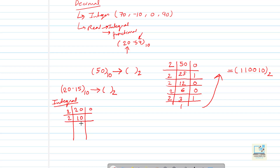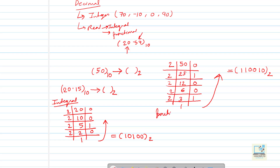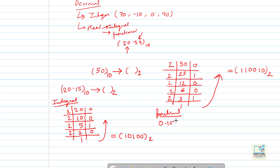Continuing: 2 times 5 is 10, remainder 0; 2 times 2 is 4, remainder 1; 2 times 1 is 2, remainder 0. Reading bottom to top, the integral part gives 10100 base 2. Now for the fractional part we multiply by 2. My value is 0.15: 0.15 times 2 is 0.30 — the integral part is 0, so we take out 0.